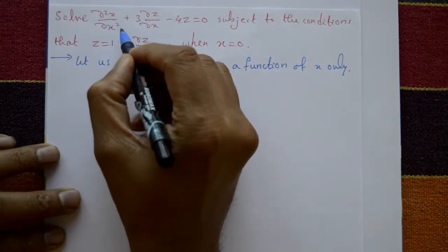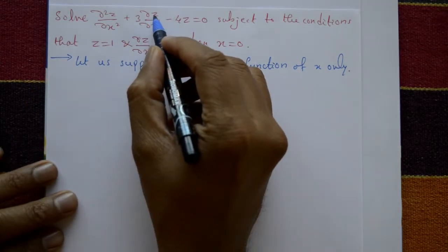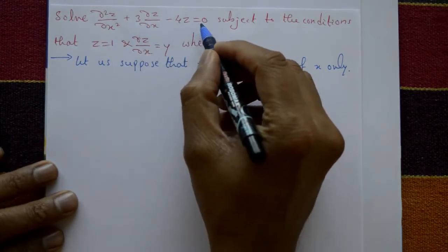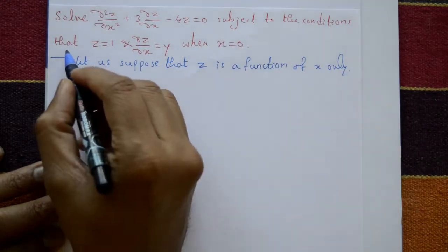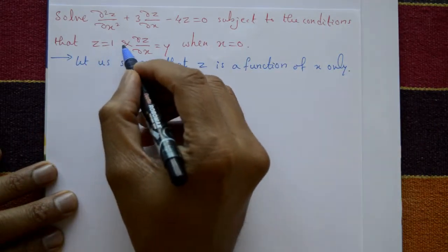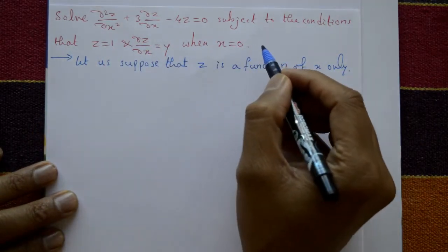Solve ∂²z/∂x² + 3·∂z/∂x − 4z = 0, subject to the conditions that z = 1 and ∂z/∂x = y at x = 0.